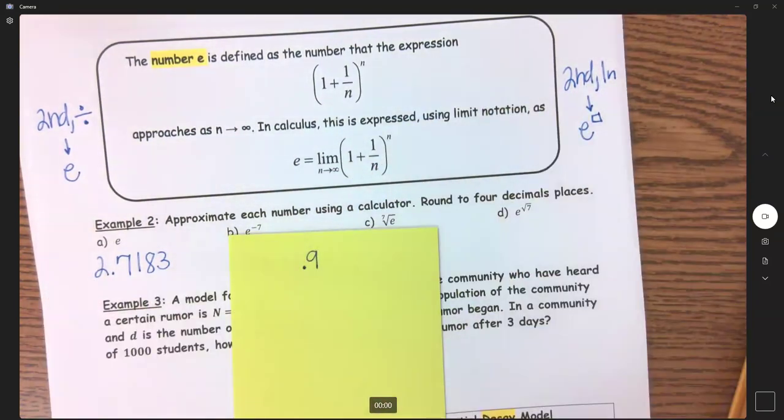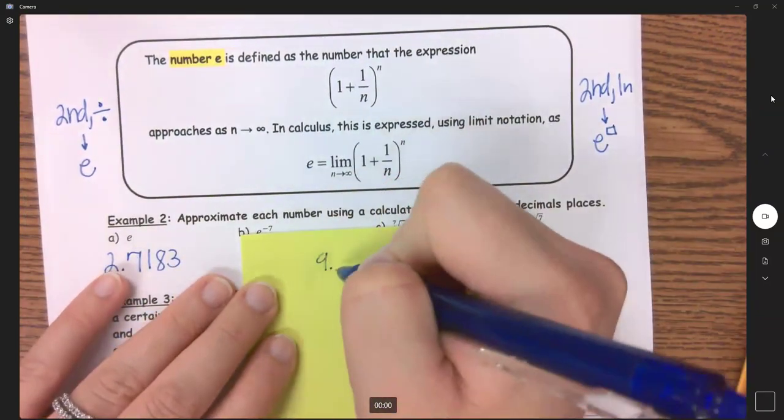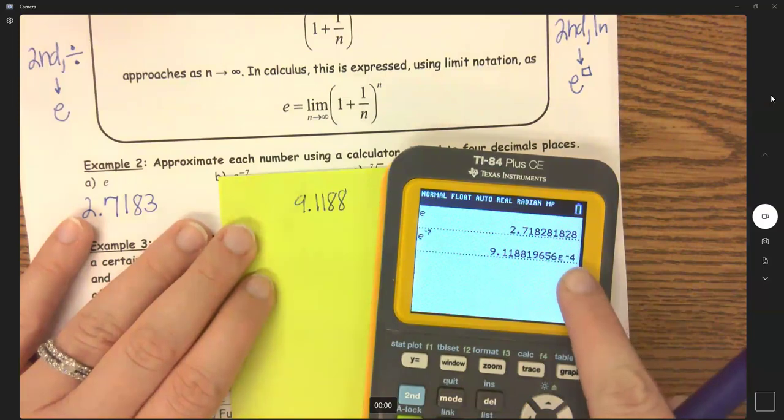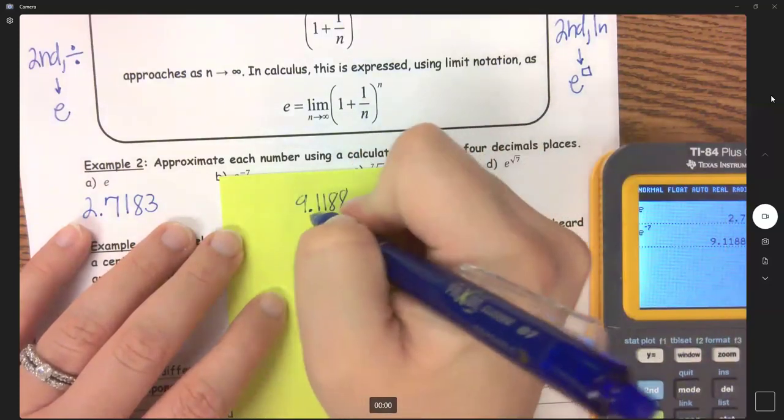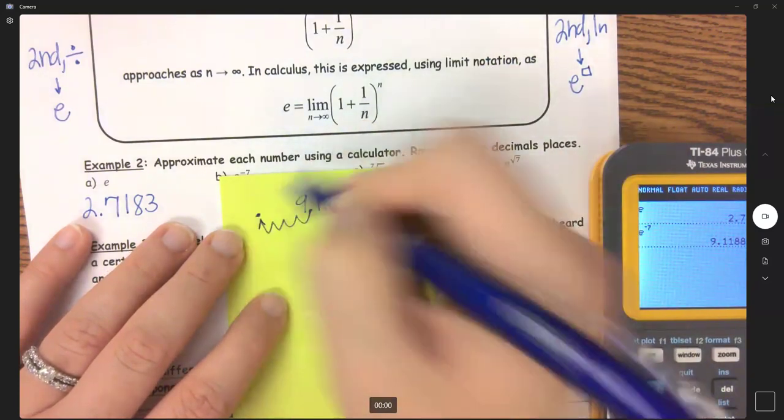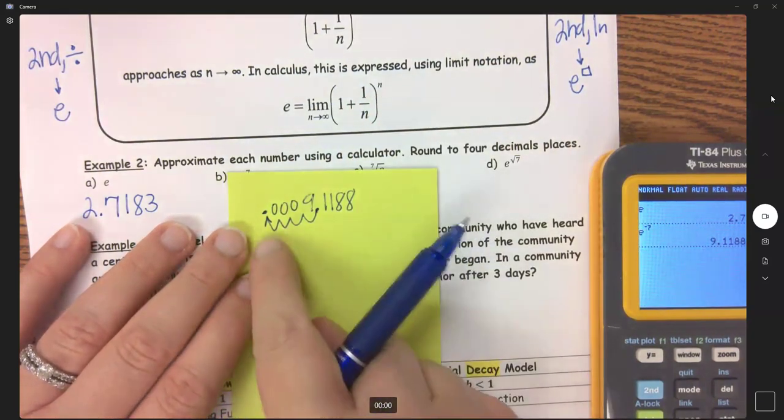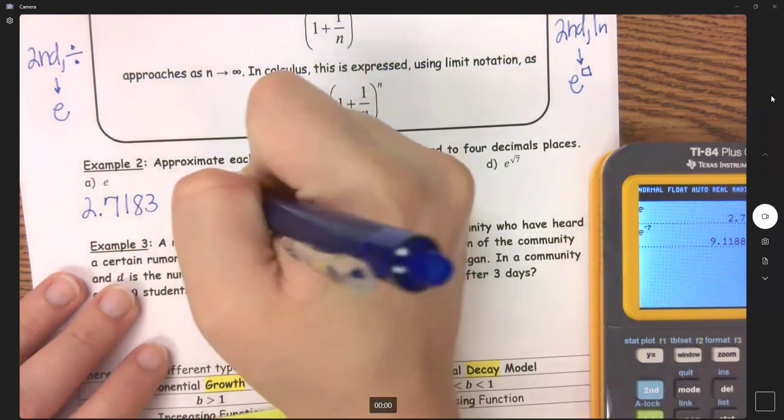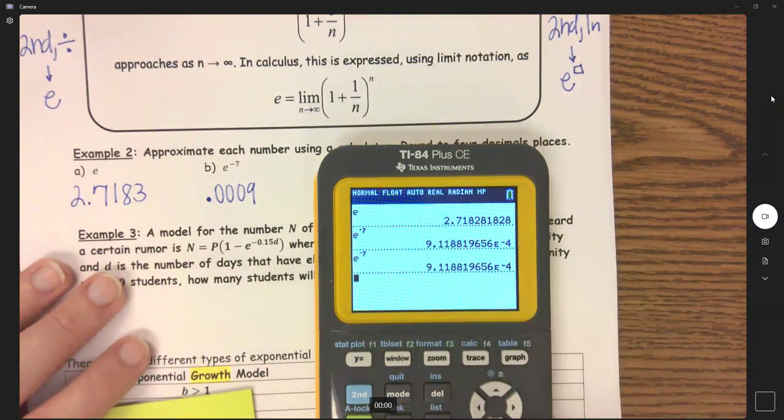9.1188. That means we need to move this decimal four places to the left. I'm going to take this decimal here and move it 1, 2, 3, 4 times. And I'll put zeros as placeholders in all of those little loops. So rounded to four decimals, this is actually just 0.0009. So be careful if you get any answers with scientific notation.